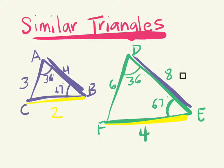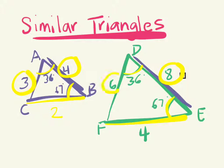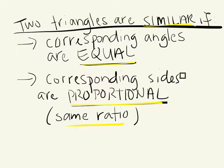These two triangles are similar because their corresponding angles are equal. If the corresponding angles are the same and the sides are proportional — meaning they were increased or decreased by the same amount — we can say that these sides are proportional to each other. Triangle ABC doubled to get triangle DEF. Two triangles are similar if the corresponding angles are equal, meaning the angles in the same relative position are equal.